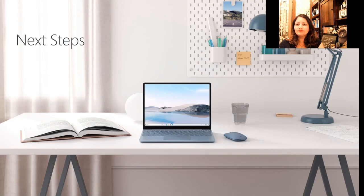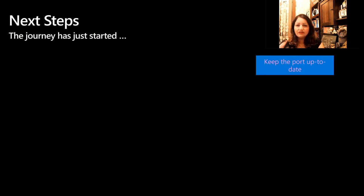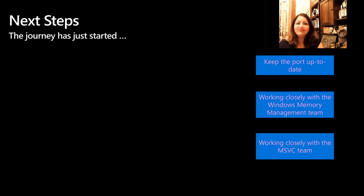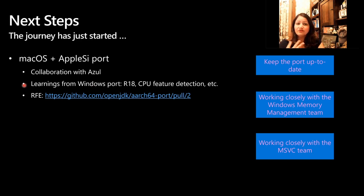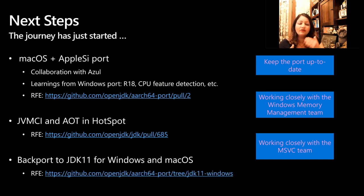Our journey has just begun. We not only want to keep our port up to date, but also work closely with the Windows and memory management team at Microsoft. We already see API-level changes we can bring to certain garbage collectors. We'll continue working with the MSVC team to make sure OpenJDK benefits from optimizations there. We're also contributing to the macOS port — bringing our learnings around register R18 and CPU feature detection. We recently added JVMC and AOT support, and we are in the process of backporting to JDK 11 for both Windows and macOS.